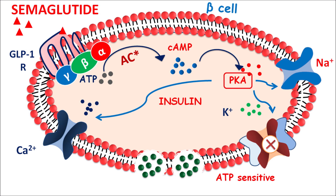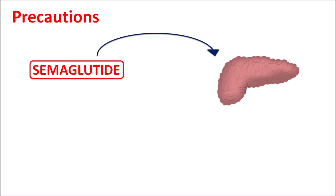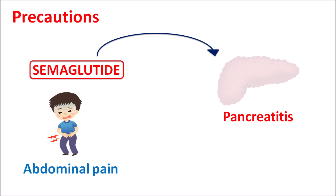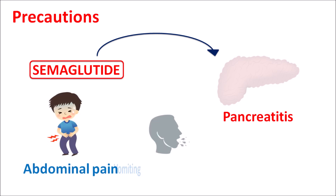This drug can also increase glucagon secretion, which helps reduce glucose levels, and it acts on the brain to reduce appetite, leading to significant reduction in body weight. One of the important precautions is that semaglutide acts on the pancreas and can produce pancreatitis as an important side effect. In patients with any history of pancreatitis, this drug should be used carefully. During treatment, symptoms such as severe abdominal pain, nausea, vomiting, and unexpected weight loss should be carefully monitored, as they may indicate the development of pancreatitis.